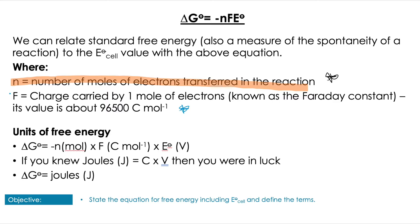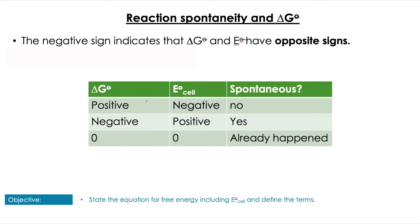We can summarize the relationship between ΔG° and E°cell, linking Unit 15 to this unit. We know that we have a spontaneous reaction when ΔG° is negative, and E°cell is always going to have the opposite sign. Remember, if E°cell is zero, then ΔG° is zero, and that's the equilibrium point - the reaction has already happened effectively.